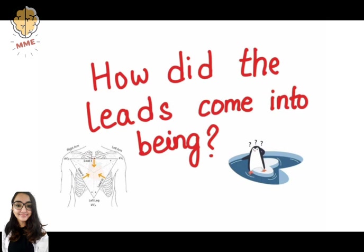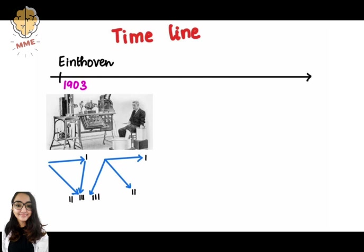How did the leads come into being in the first place? Well, Einthoven recorded the first ECG in the world in the year 1903. As there were no adhesive electrodes or intensifying systems available at that time, the only way to contact the body was to place the extremities in a bucket of salt solution.